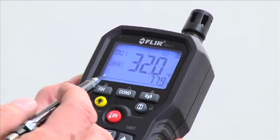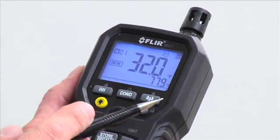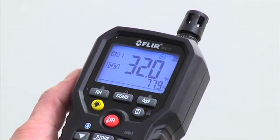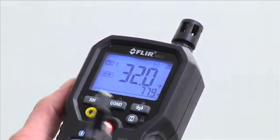We press the RH button. We're now in dew point mode, and the meter is taking the temperature and humidity measurements and calculating the dew point measurement.